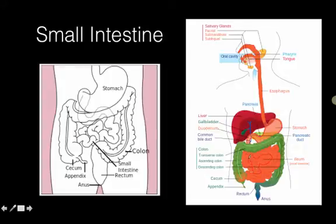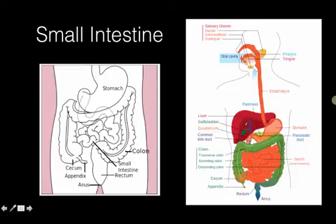As food moves through the small intestine, nutrients get absorbed into the blood. The blood vessels leaving the small intestine go to the liver, where any extra glucose can be stored as a larger molecule called glycogen, saved for later.